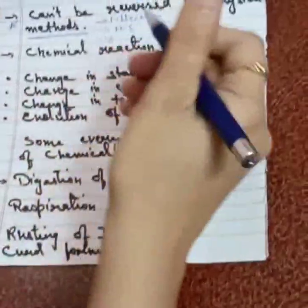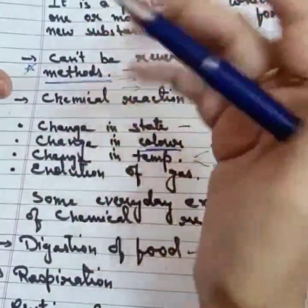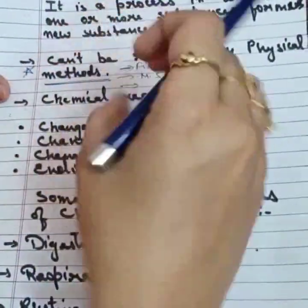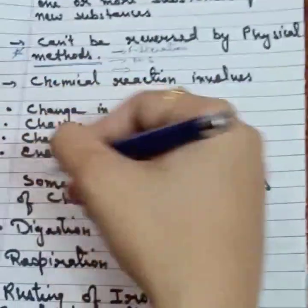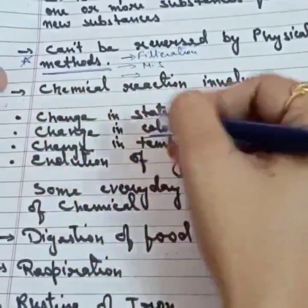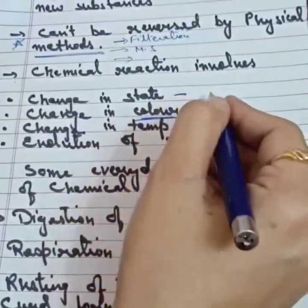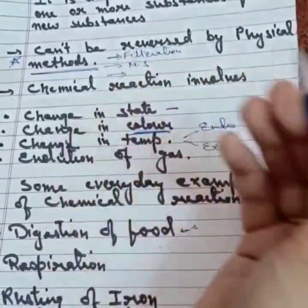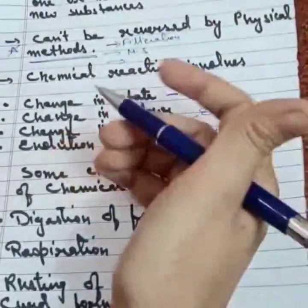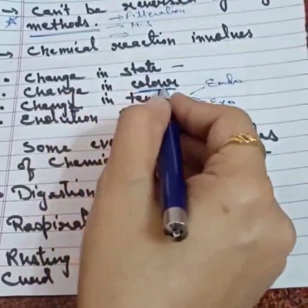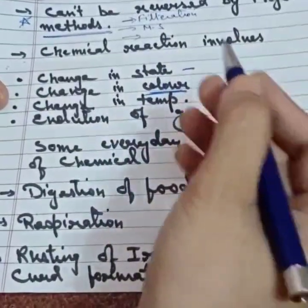Now, how do we identify that a chemical reaction has occurred? There are a few physically observable changes that accompany a chemical reaction. Those physically observable changes can be any one of four types. First is change in state — a chemical reaction may lead to change in state, like a solid getting converted into a liquid or gaseous state, or a liquid getting converted into solid or gaseous state.